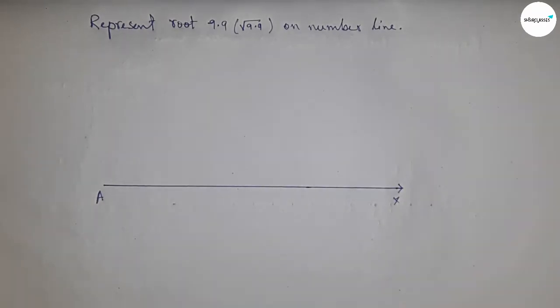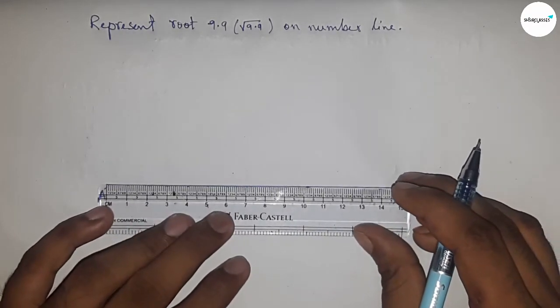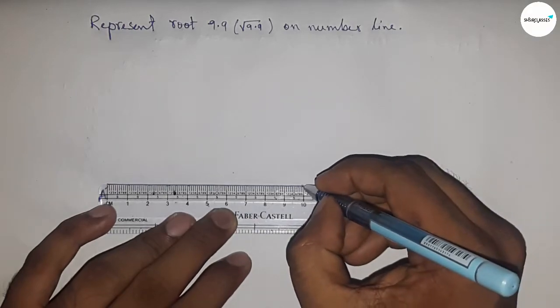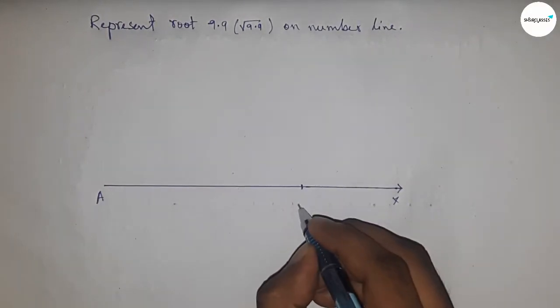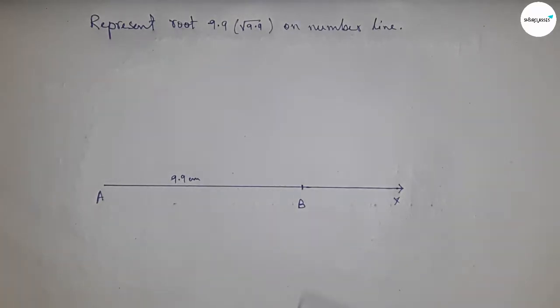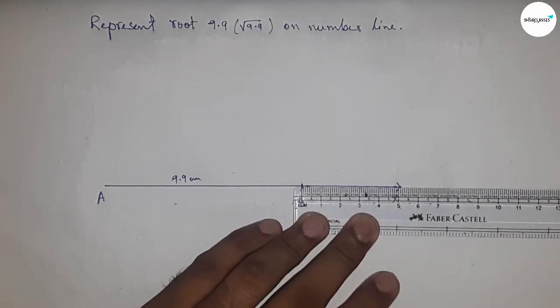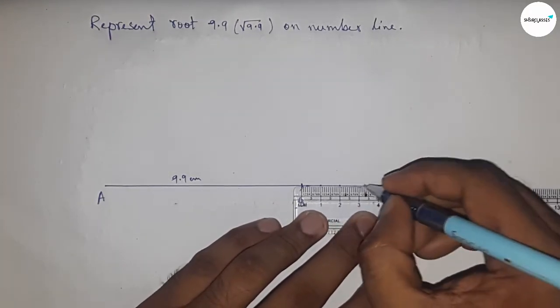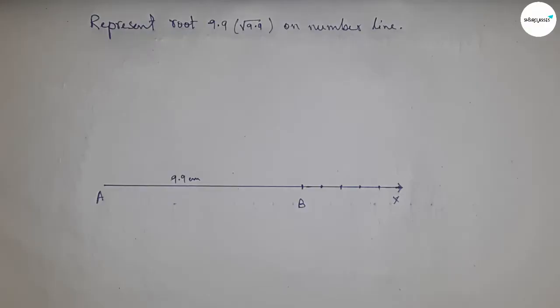Next, take 9.9 centimeter by using scale. So this is 9.9 centimeter and taking B point, so AB is 9.9 centimeter. Next, mark the numbers on the line from B to X by using scale.